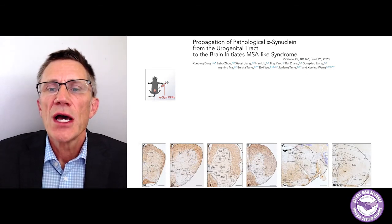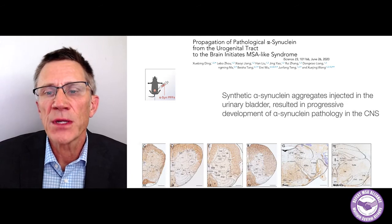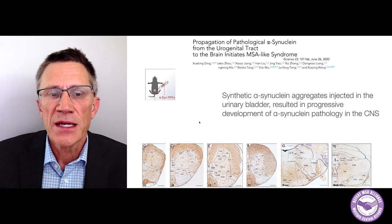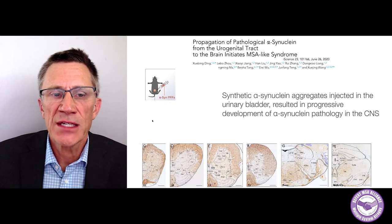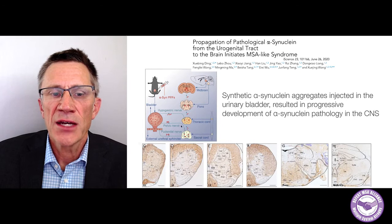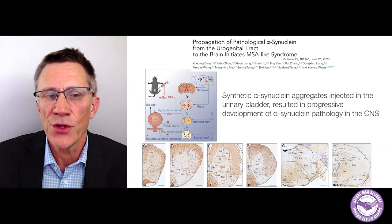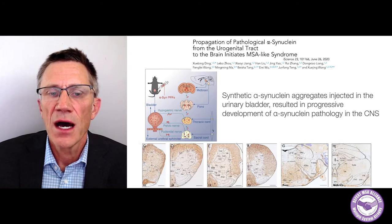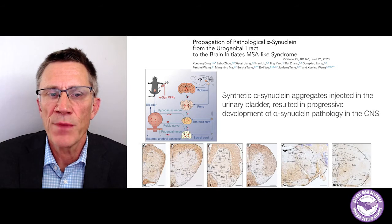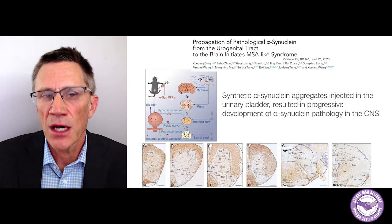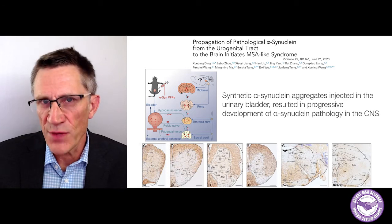There was a progressive development of synuclein pathology in the central nervous system. A schematic shows the injection in the urinary bladder and the nerves that could carry these aggregates into the central nervous system, causing spreading up the spinal cord, to the brain stem, and eventually to the midbrain — where the dopamine neurons are that succumb in many forms of MSA.